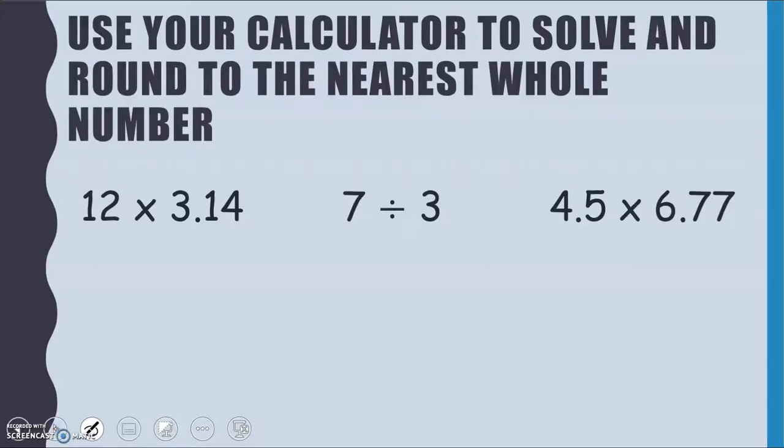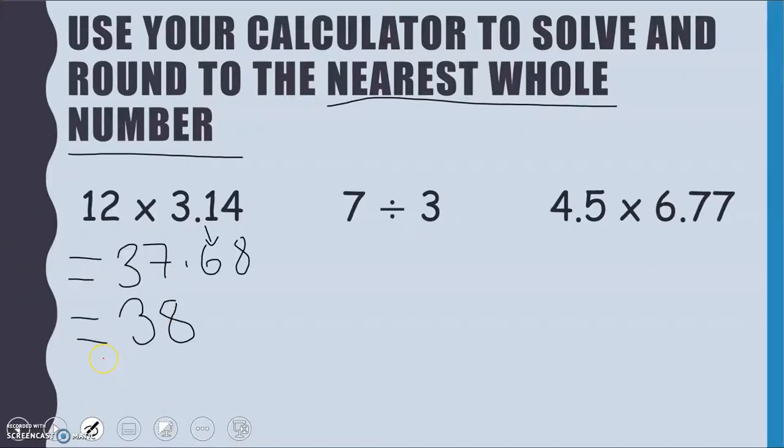Now we are going to use the calculator to solve and round these to the nearest whole number. So 12 times by 3.14. That should give me 37.68. And then we've been asked to round it to the nearest whole number. So doing the same as last time. My 6 is the one that tells me whether we're rounding up or staying the same. 6 tells me to round up. So that is going to become 38. Now, when you are given a question like this and it asks you to round, we always show our unrounded answer first. So I would expect to see this line. And then you write in your final answer.